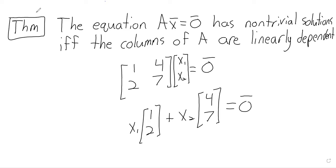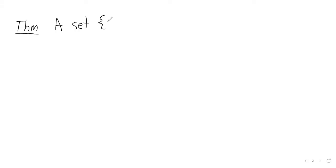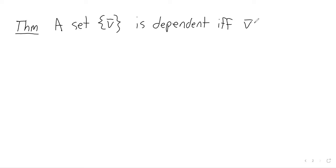At this point we'll state in quick succession a list of four theorems, and we might give proofs as well. The proofs are not because I want you to write proofs on tests — if we give proofs it's because they provide helpful illustrations of the definitions. Theorem: a set containing a single vector is dependent if and only if that vector is the zero vector.